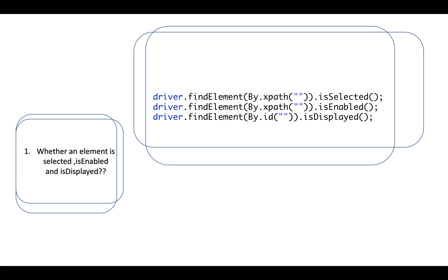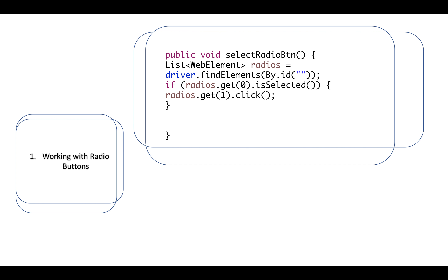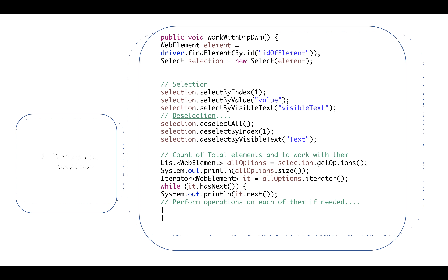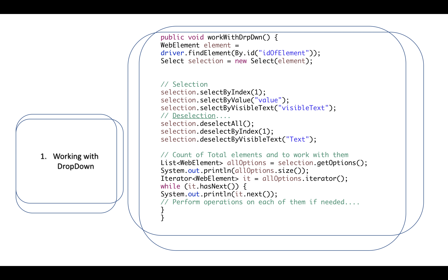How to work with radio buttons: get the radio buttons in a list of WebElement using driver.findElements(). Check if one is selected using isSelected() — if the first one is selected, select the second one by clicking it.